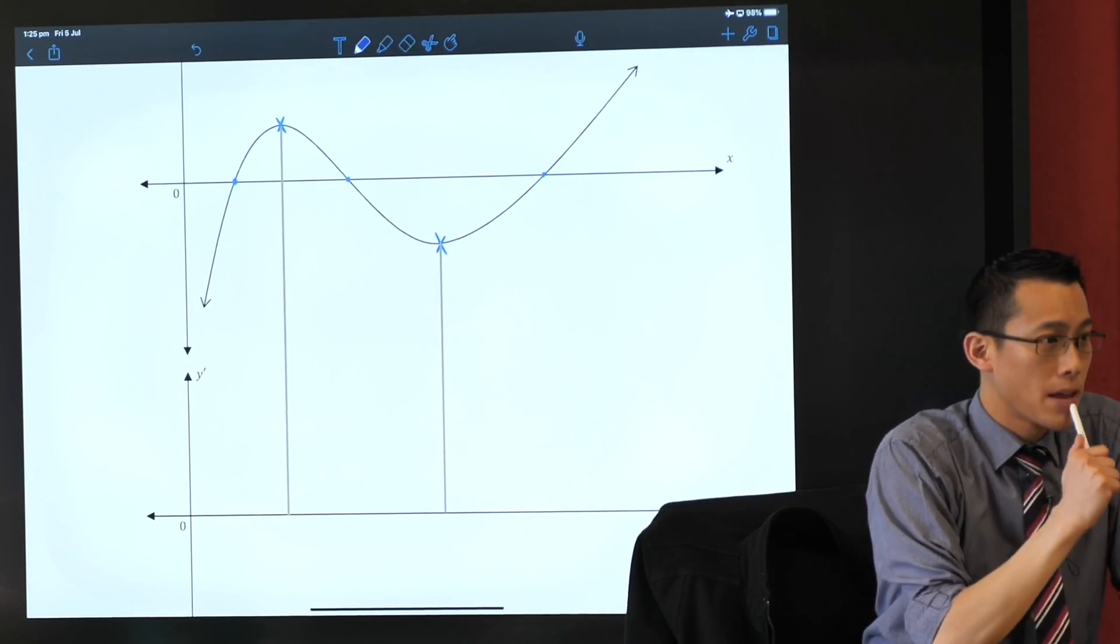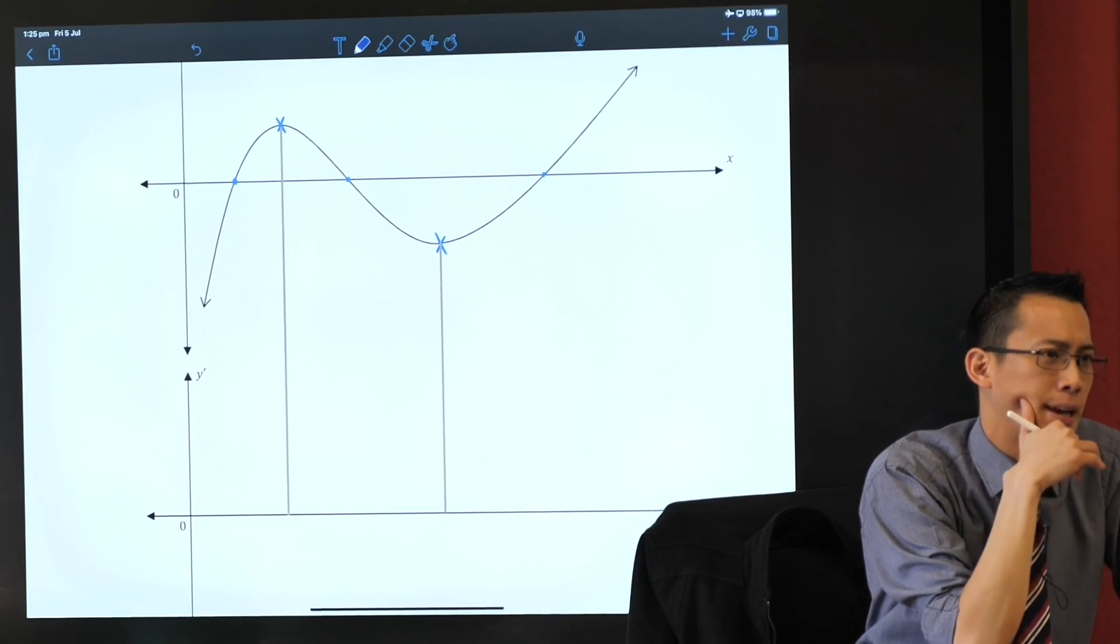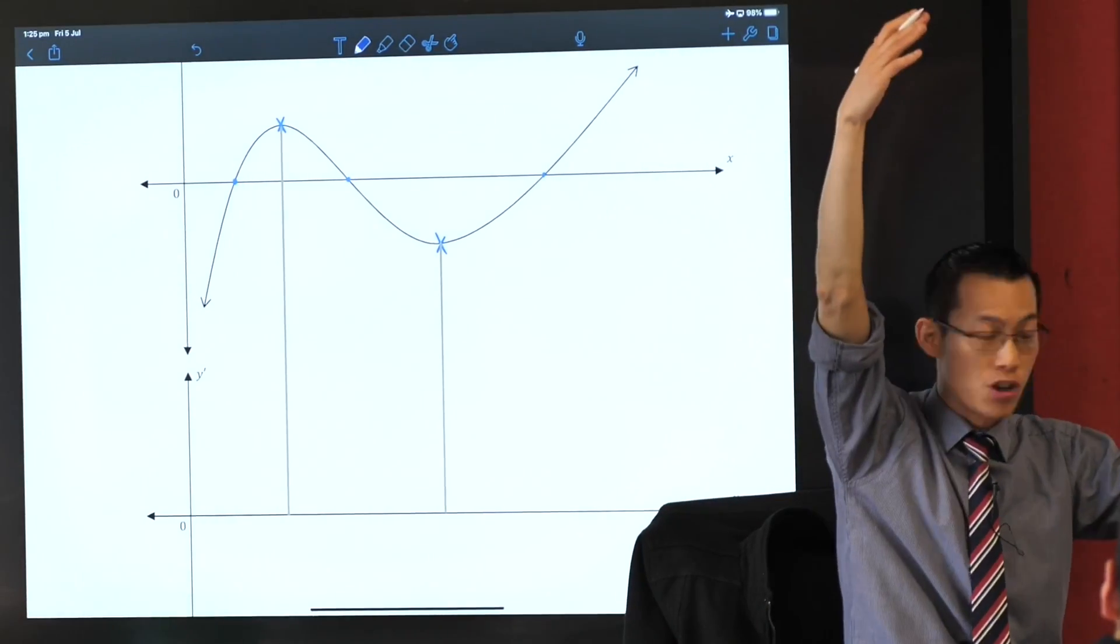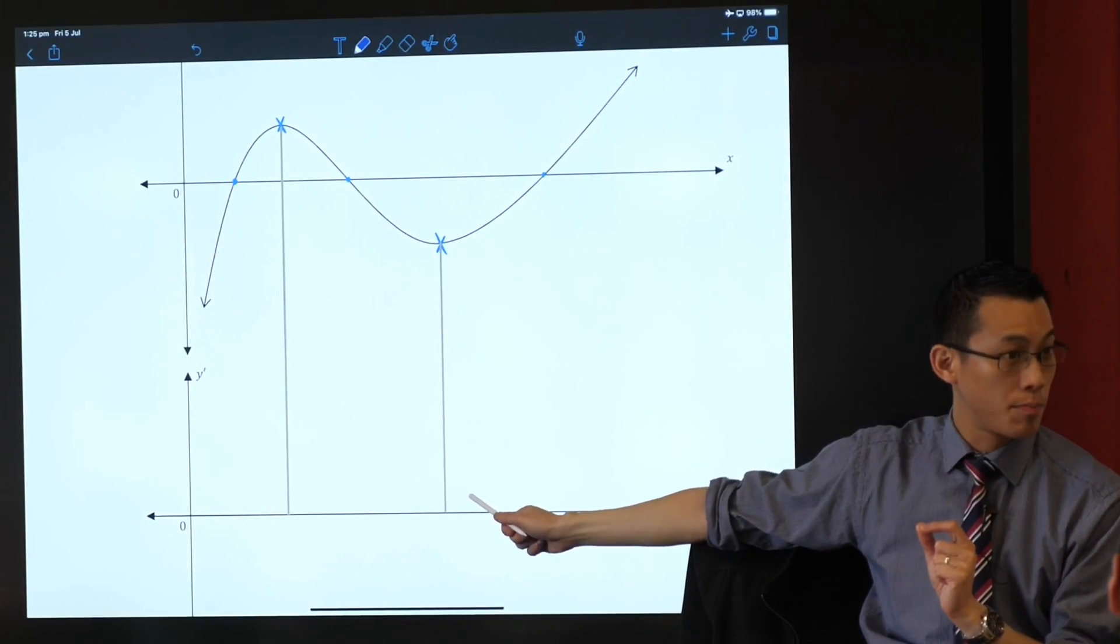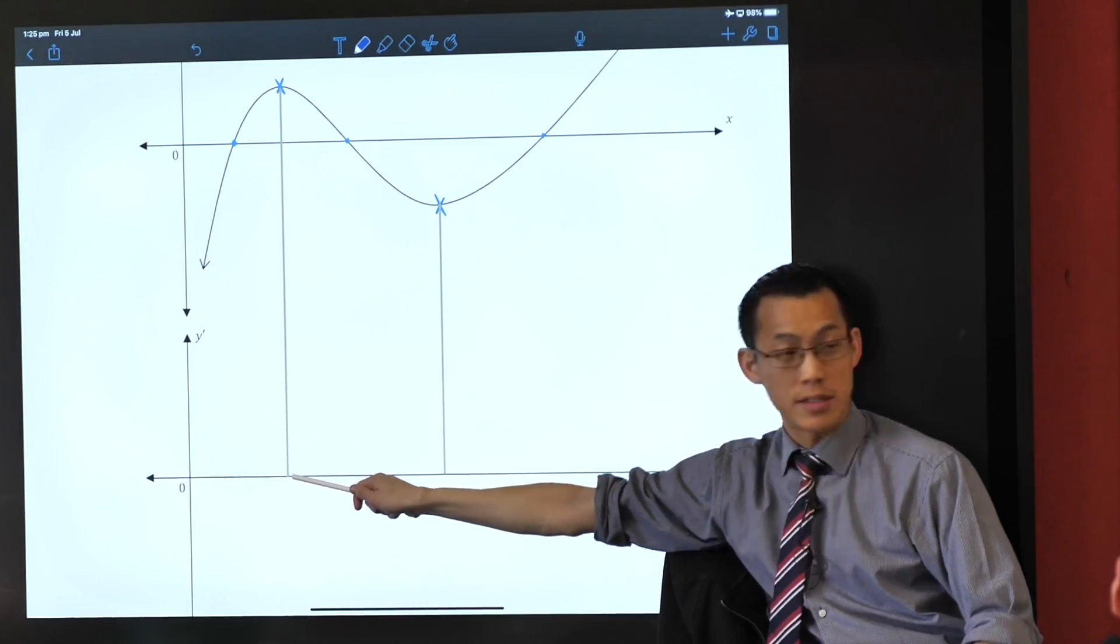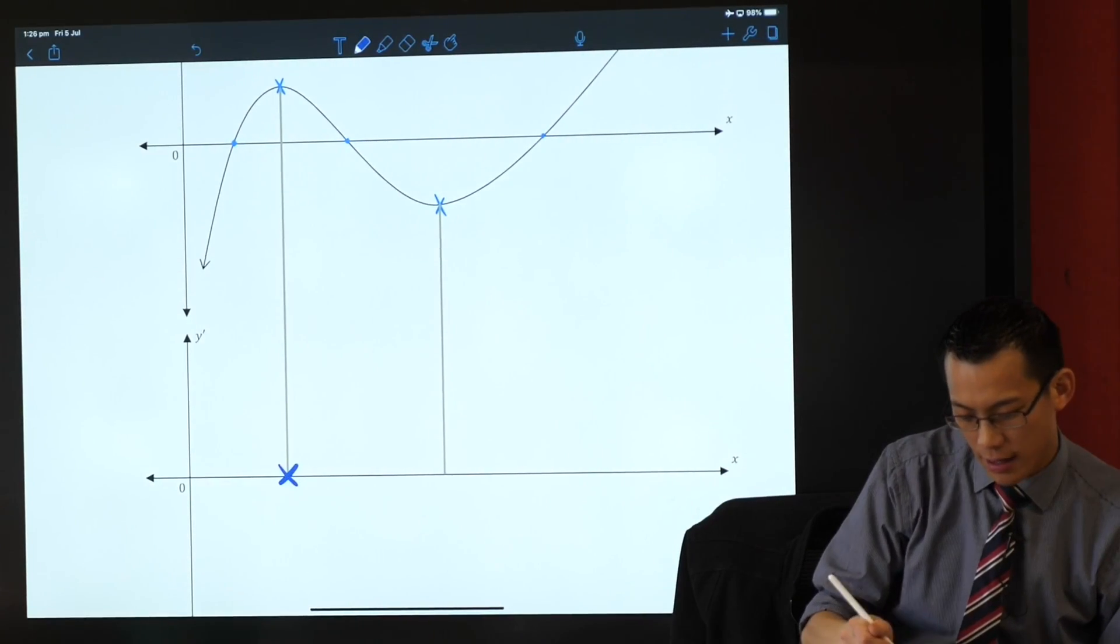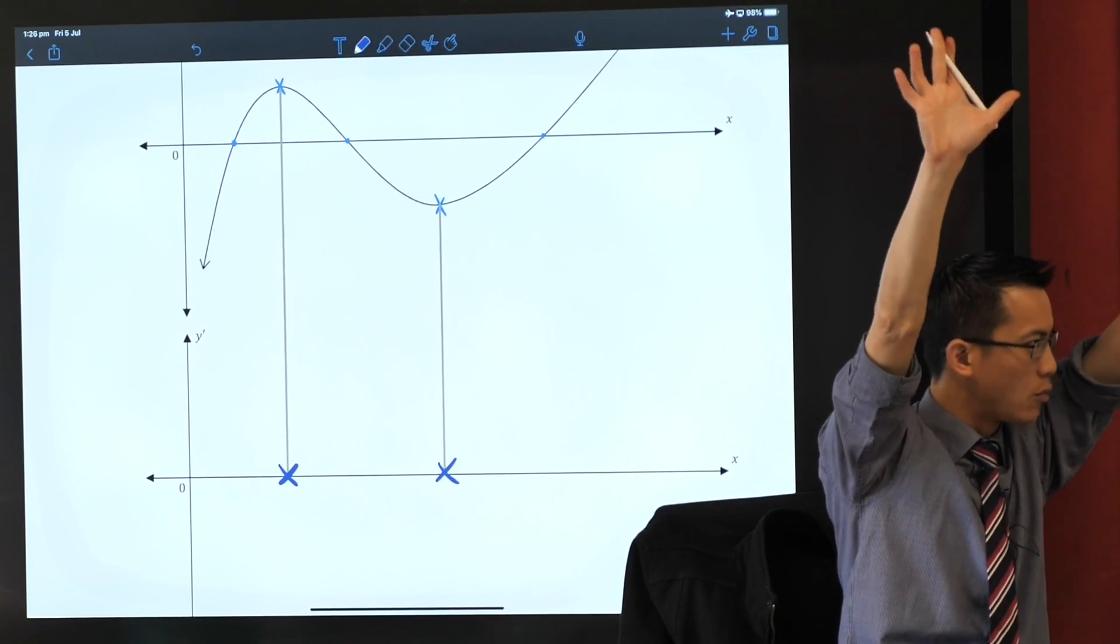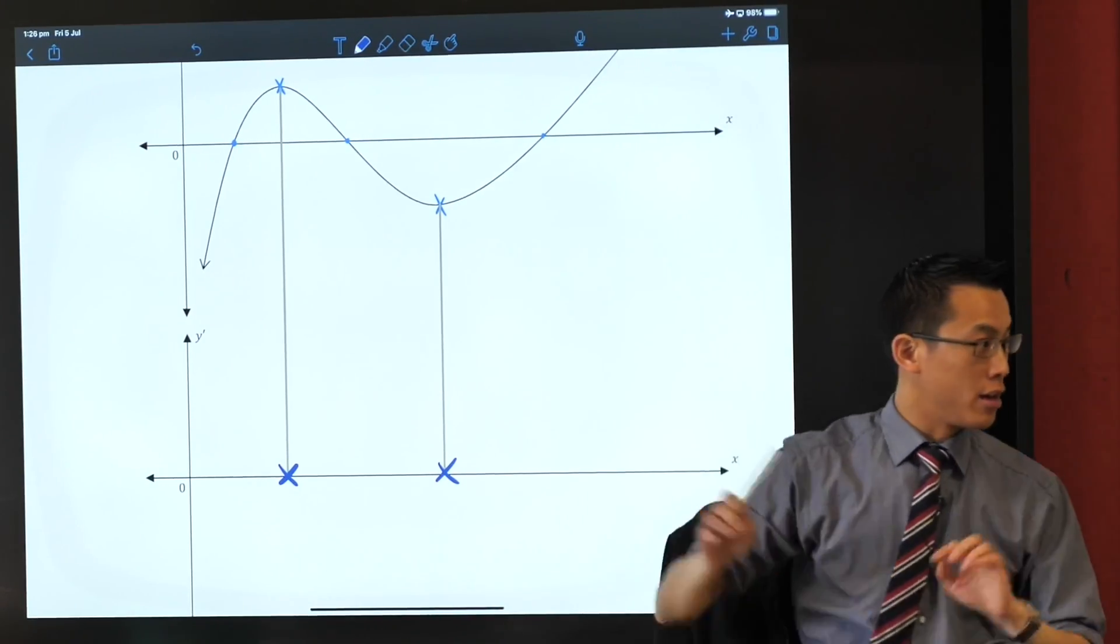Now, we picked these guys out because if the tangent, like we said, is horizontal, what would the value of the gradient be if your tangent's horizontal? It's zero, right? Because you're not rising, you're not going up, you're not dropping, you're not going down. So you've got a gradient and that's what this next graph is about. You've got a gradient of zero. So that's why you can see my lines, they extend down to, what's this line represent? That's y equals zero, right? Or y dash equals zero, I should say.